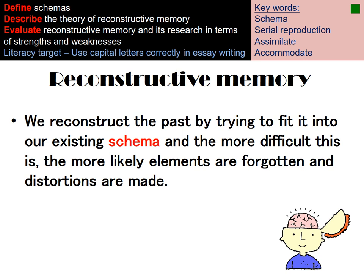In order to reconstruct the past, we try to make our memory fit in with our existing schema. Our schema is our pre-existing understanding, knowledge, or experiences of the world. For example, if you showed me a bird, I might remember it had two wings because my knowledge of birds is that they have two wings — even if that bird had a broken wing or different-colored feathers. I change that memory to reflect what I already know, making my memory unreliable.